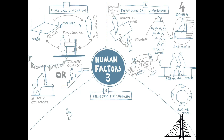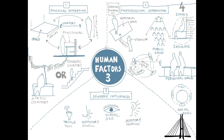In addition to these physical and psychological dimensions, space also has tactile, auditory, olfactory, and thermal characteristics that influence how we feel and what we do within it. These five aspects, if coordinated in the right way, will elevate the overall ambience of the space.